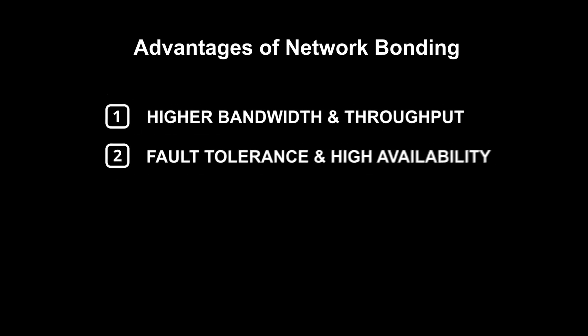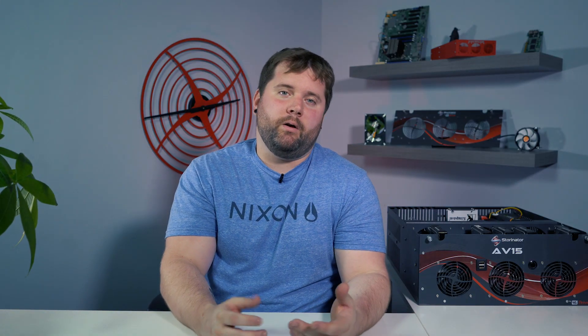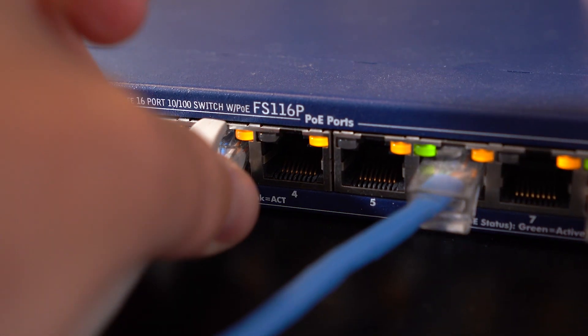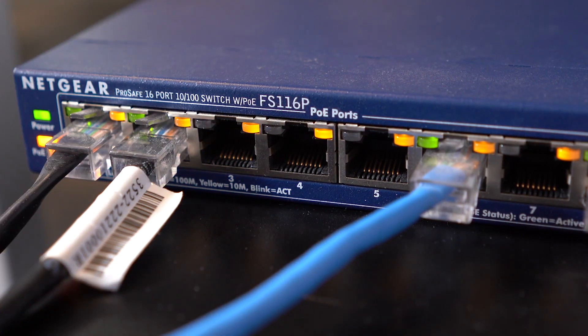Network bonding is where you take two or more network interfaces and combine them into a single logical network interface. This can be great for one of two reasons: one is to create higher bandwidth and throughput, and the other is for fault tolerance and high availability. One great thing about network bonding is that if one interface goes down or is unplugged, another network interface in the bond will pick up the slack and continue working.